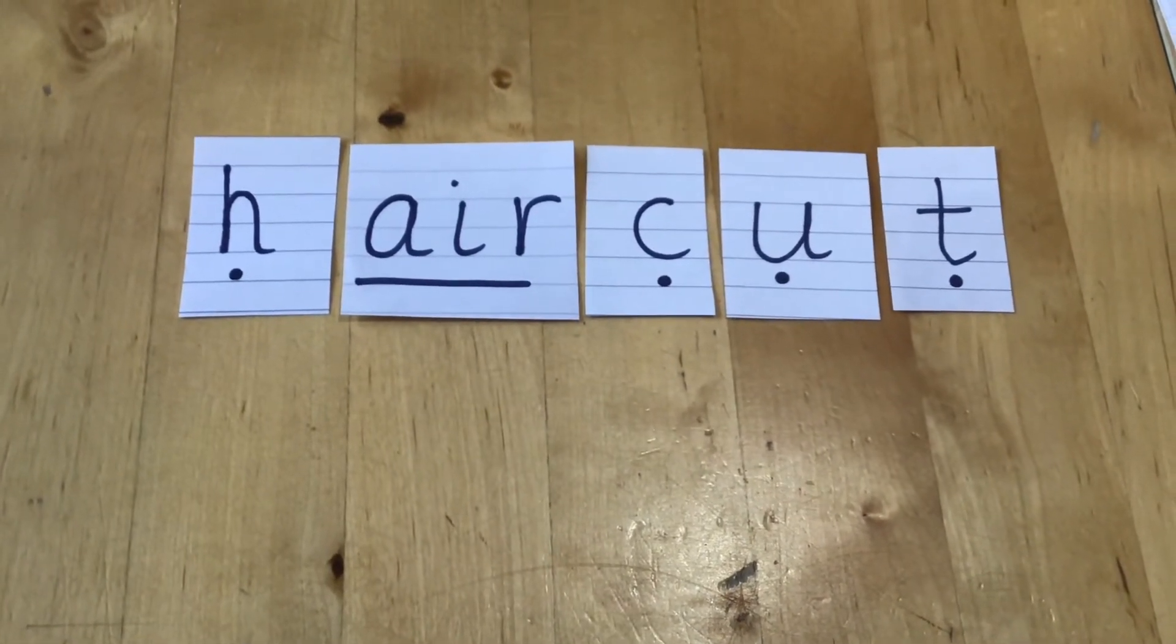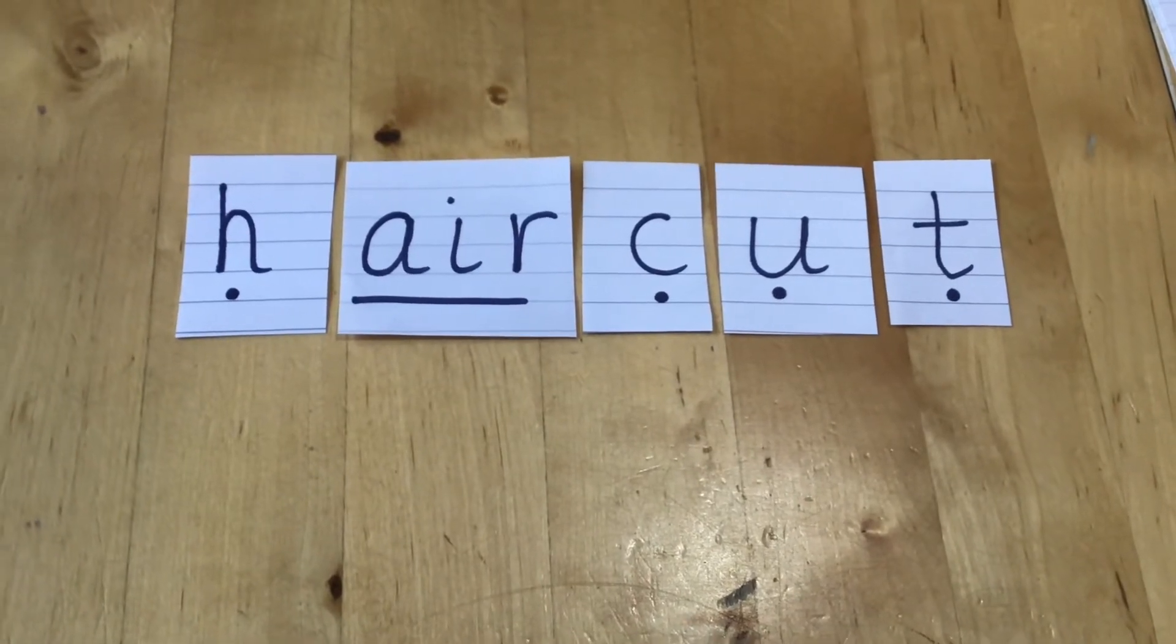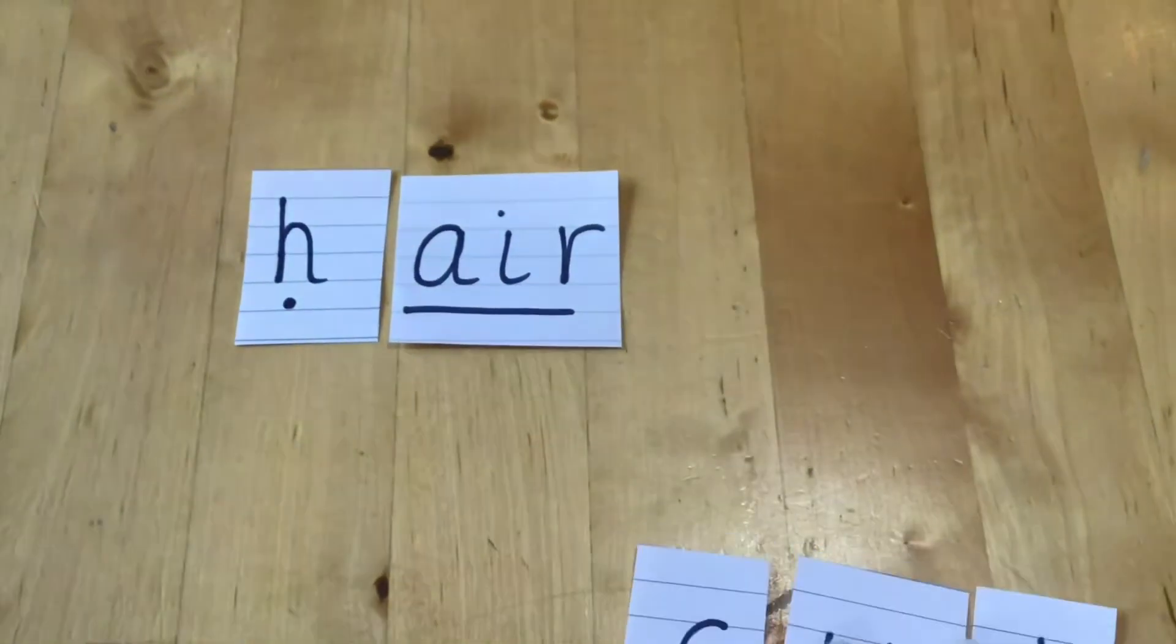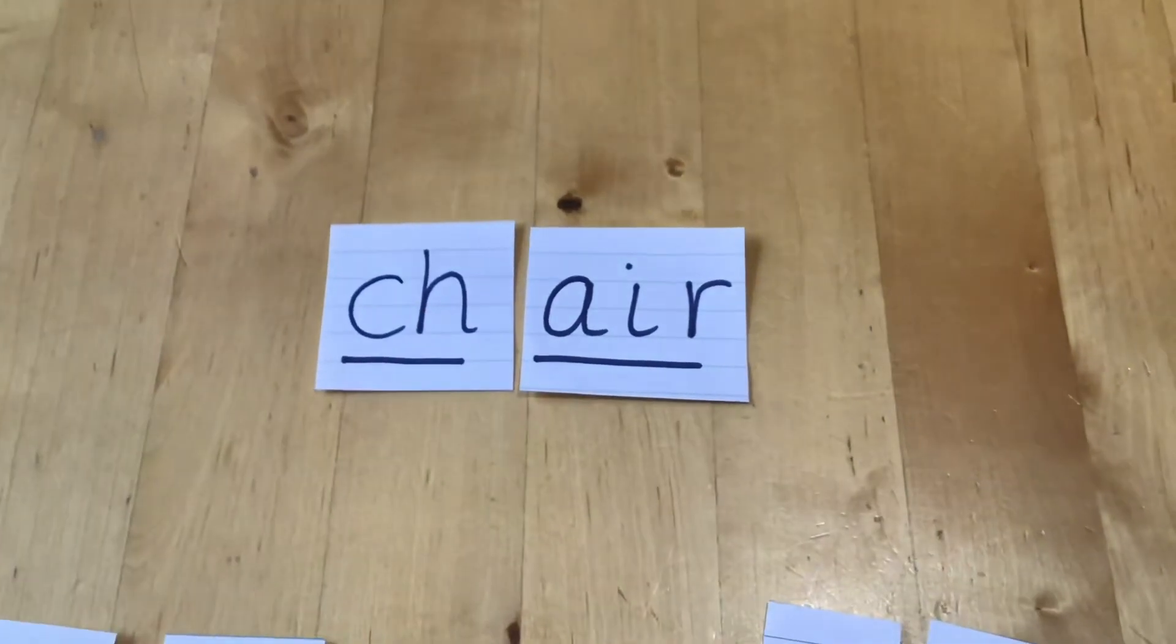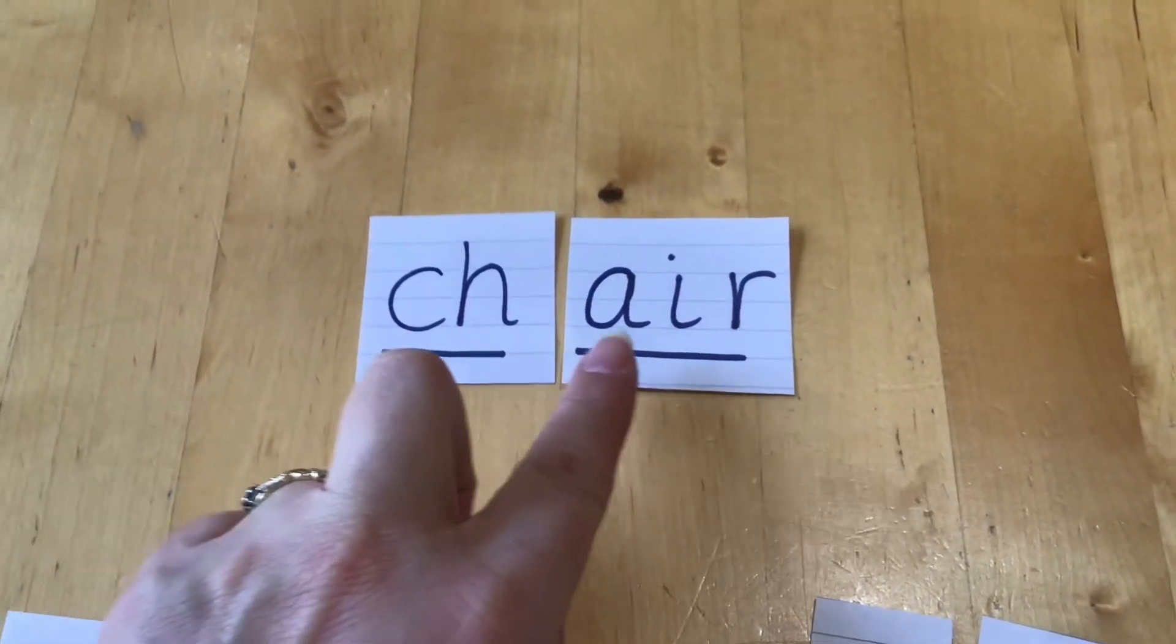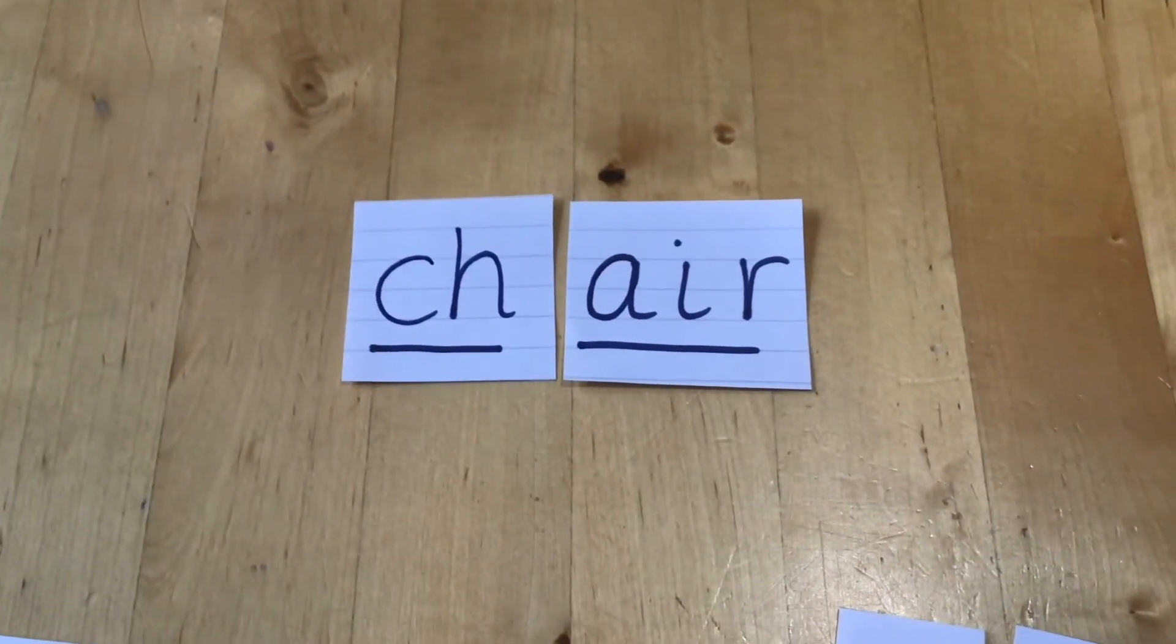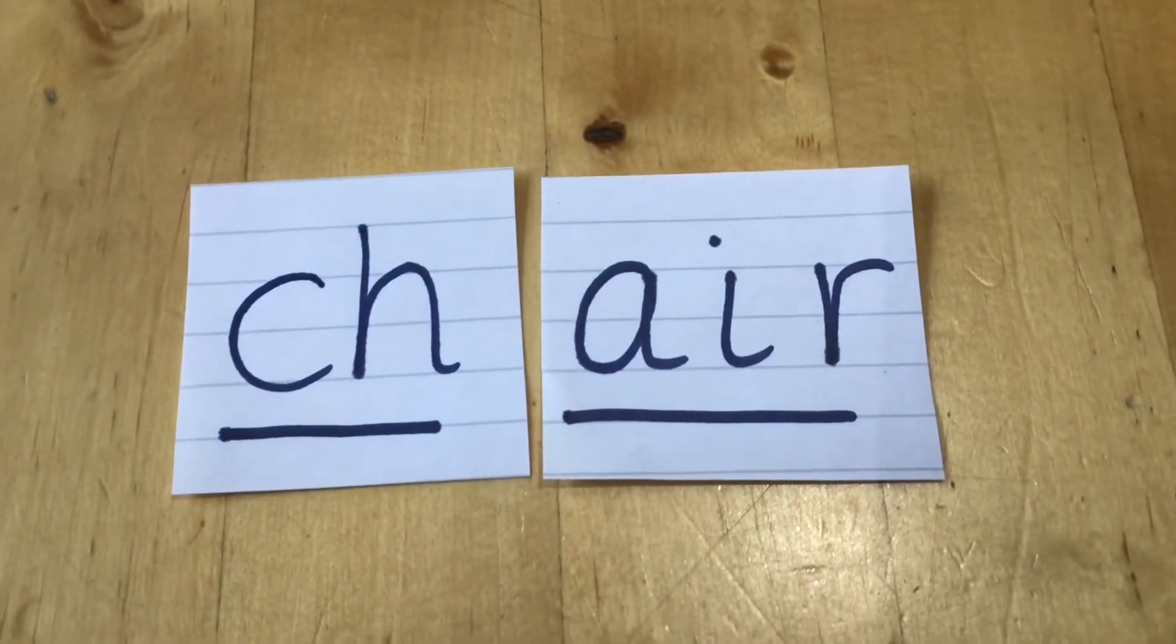But remember, when you look at a word, look first of all to see if it's got any special friends in it. Especially in a word like this one. We've done it before. What's this one say? Chair. Chair. Because that word has one, two, three, four, five letters in it. Five graphemes. But only two sound buttons. So sometimes you have to look really carefully, don't you, to spot those special friends.